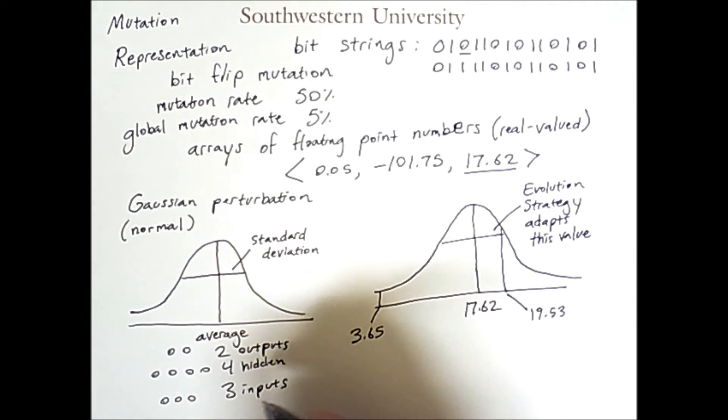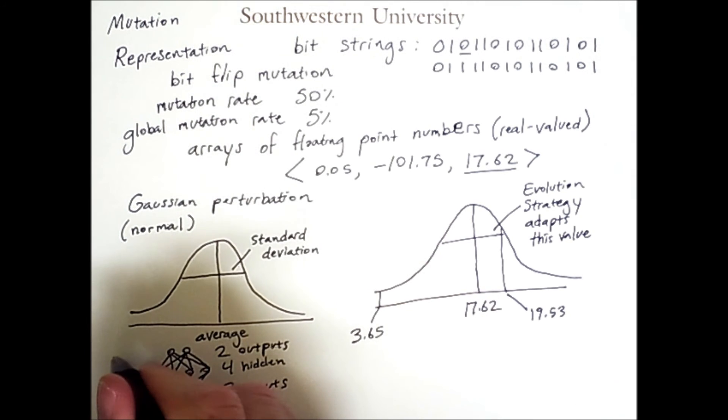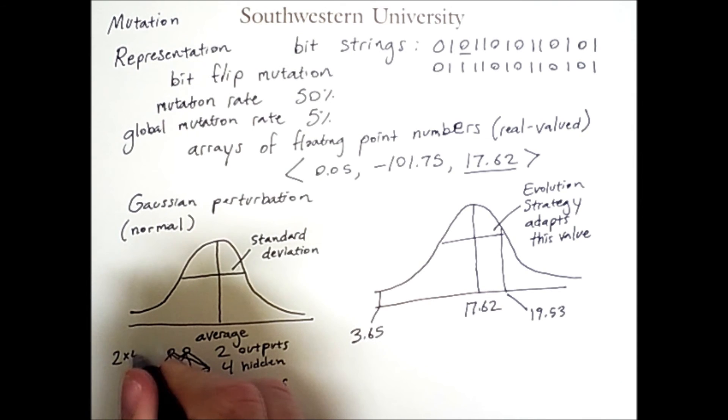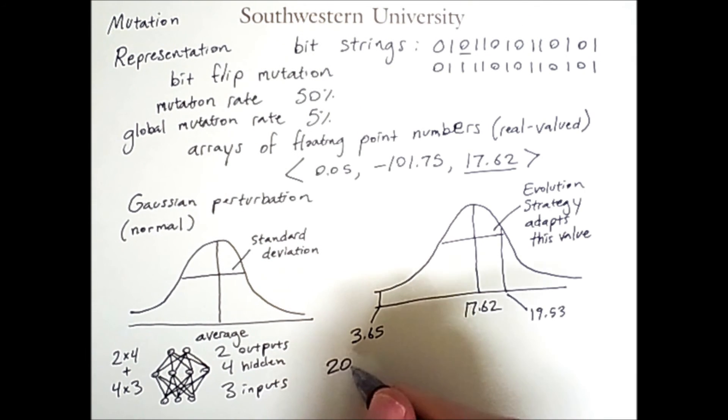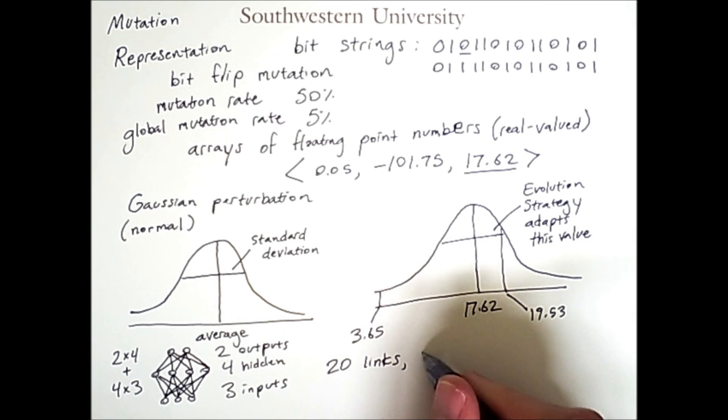Now, assuming this network is fully connected, we would have the following links. That is 2 times 4 links between these two layers, plus 4 times 3 links between these two layers, for a total of 20 links, meaning 20 floating point numbers are needed.